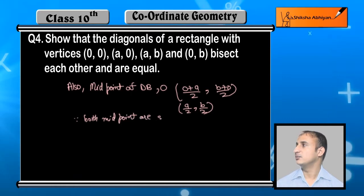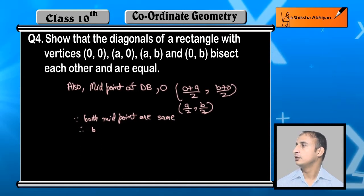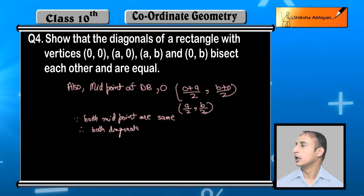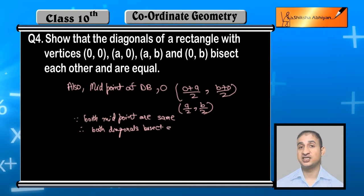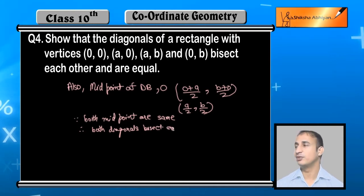So both midpoints are the same. Therefore, both diagonals bisect each other, because the midpoint is the same.